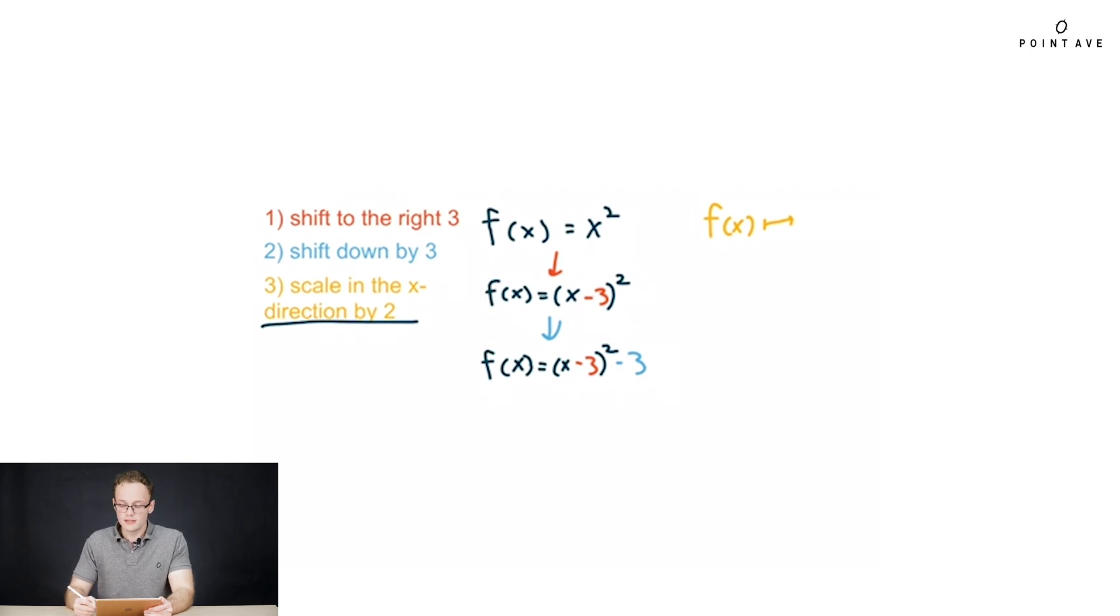Scaling, remember, is a multiplication. And because it's an x scaling, we need to multiply it directly to x, so it becomes x over 2, remembering left-right lies. That's why we're dividing by 2 instead of multiplying by 2. Plugging that in gives us the final function of x over 2 minus 3 all squared minus 3.